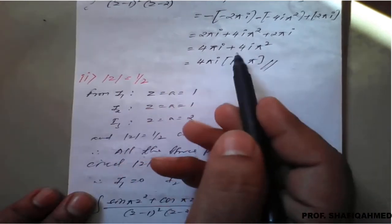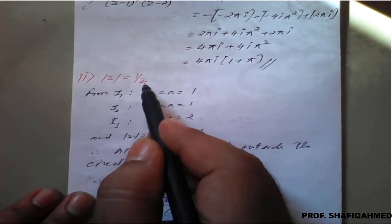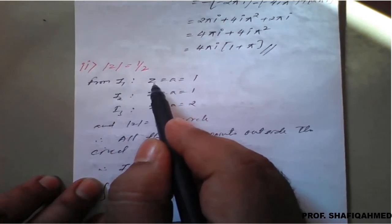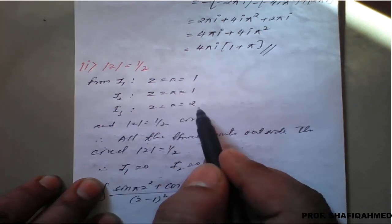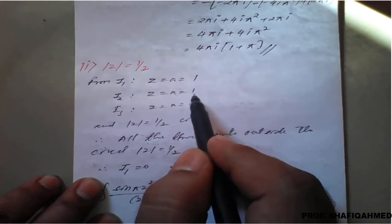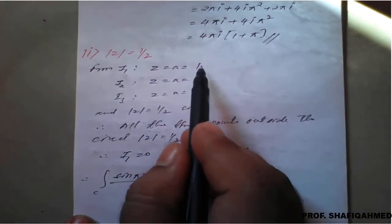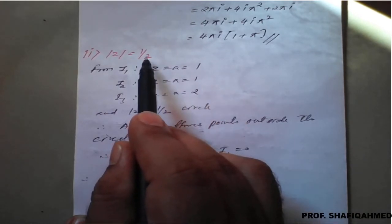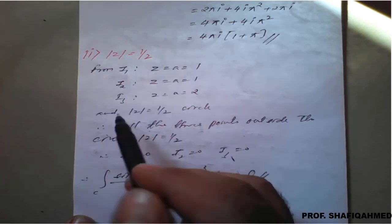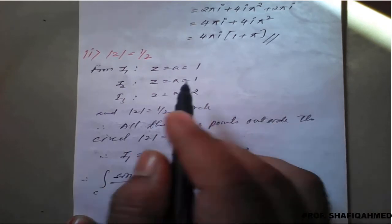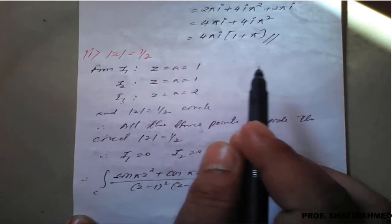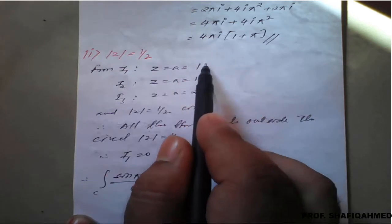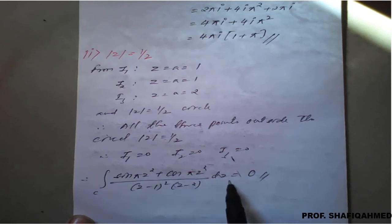For the second curve, |z| = 1/2. The pole values are a = 1, 1, and 2, all of which are greater than the radius 1/2, meaning all three poles lie outside the circle. By Cauchy's theorem, I1 = 0, I2 = 0, I3 = 0, so the final result is 0.